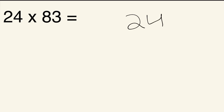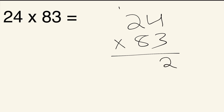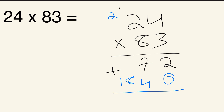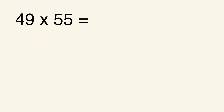Next: 24 times 83. Write it vertically. 4 times 3 is 12 — write the 2, carry the 1. Then 3 times 2 is 6, plus 1 is 7 — giving 72. Add the 0, then 8 times 4 is 32 — write the 2, carry the 3. Then 8 times 2 is 16, plus 2 gives 18 — write 8, carry 1, giving 1,840. Adding 72 plus 1,840: the answer for 24 times 83 is 1,992.